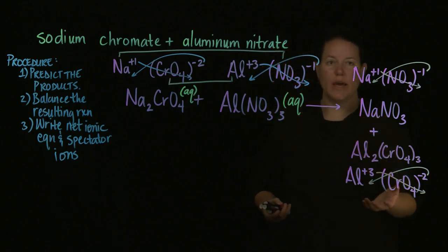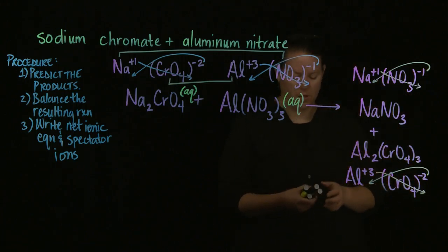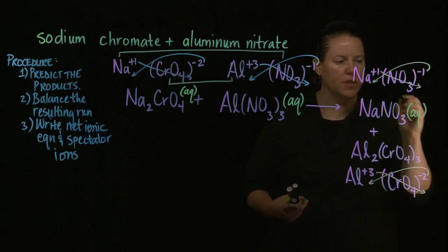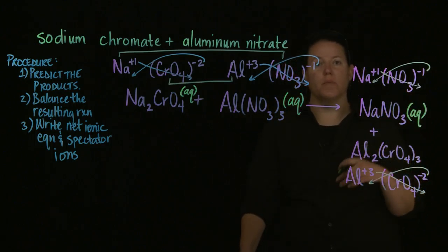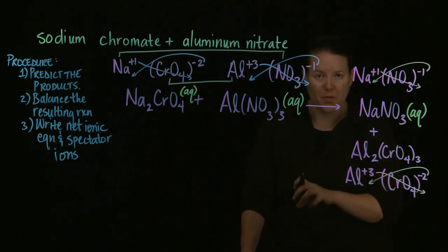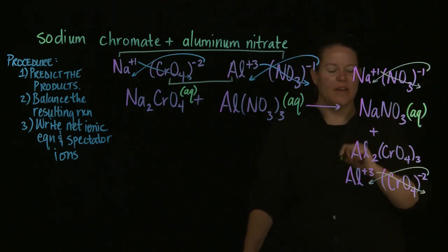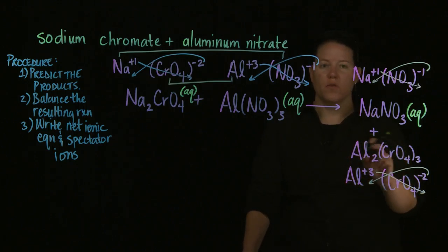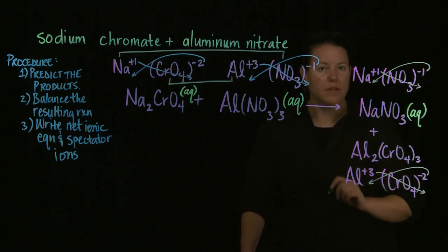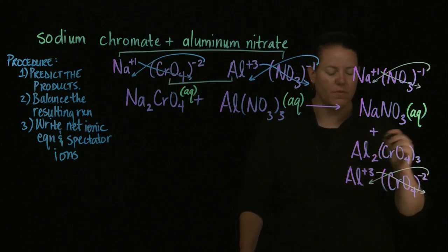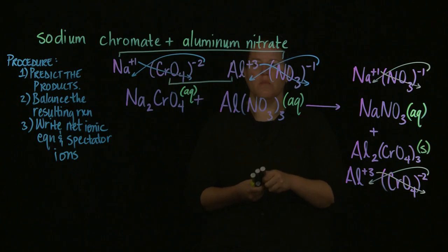Looking at the solubility rules for the products: Na and NO₃ are both always soluble, so NaNO₃ gets an AQ. The rest of the solubility rules are characterized by the anion, so I look for chromates. Chromates are generally insoluble — aluminum is not an exception — so Al₂(CrO₄)₃ gets an S. The solubility rules are at the bottom of the periodic table you're given, so you'll have those available. That gives us our predicted equation.